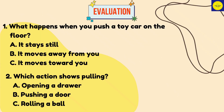Write the letter of the correct answer. Number 1: What happens when you push a toy car on the floor? A. It stays still. B. It moves away from you. C. It moves towards you. Number 2: Which action shows pulling? A. Opening a drawer. B. Pushing a door. Or C. Rolling a ball.